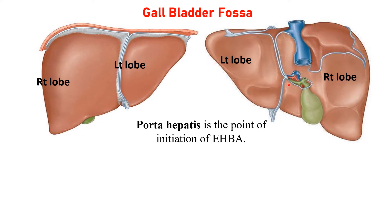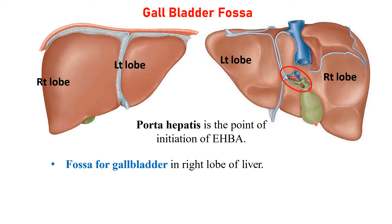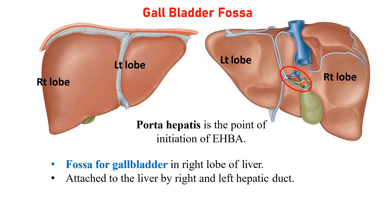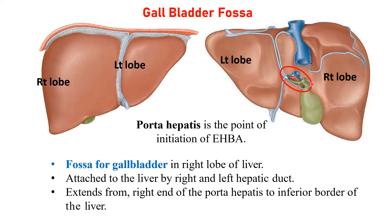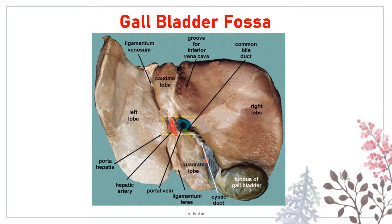The porta hepatis is the point of initiation of the extrahepatic biliary apparatus. The fossa for the gallbladder is in the right lobe of the liver, and it is attached via its cystic duct joining the common hepatic duct. The gallbladder fossa extends from the right end of the porta hepatis to the inferior border of the liver. In a cadaveric specimen, you can see the depression of the fossa with the gallbladder and its cystic duct, along with the area of porta hepatis on the inferior surface.